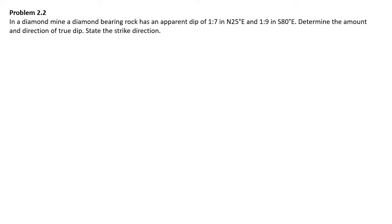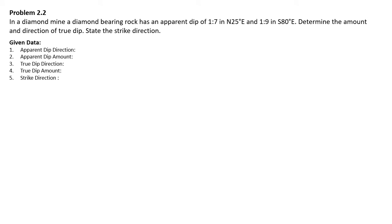Problem 2: In a diamond mine, a diamond-bearing rock has an apparent dip of 1 is to 7 in north 25 degrees east, and 1 is to 9 in south 80 degrees east. Determine the amount and direction of true dip.